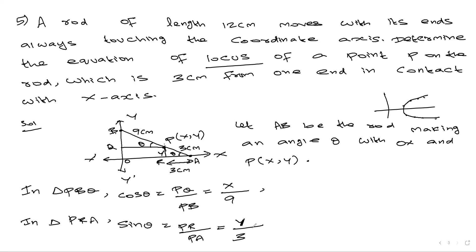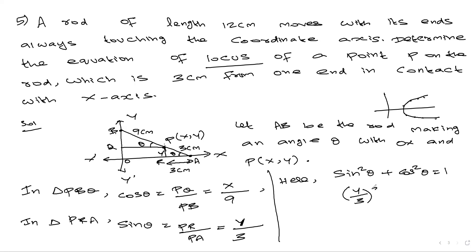We have the trigonometric identity: sin²θ + cos²θ = 1. Substituting: (y/3)² + (x/9)² = 1, which gives y² / 9 + x² / 81 = 1.